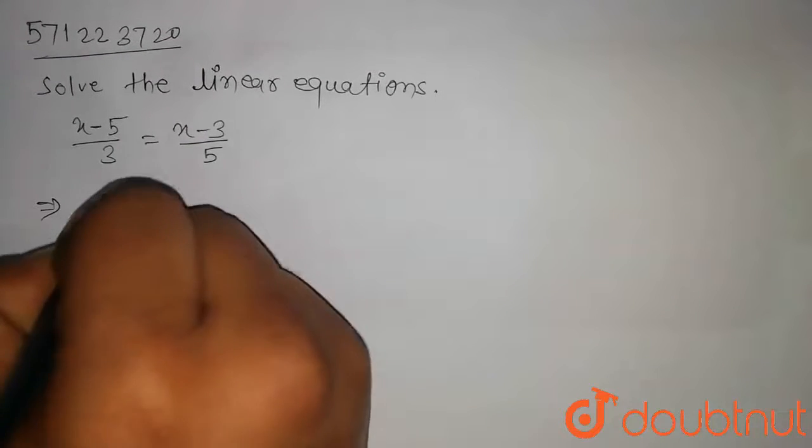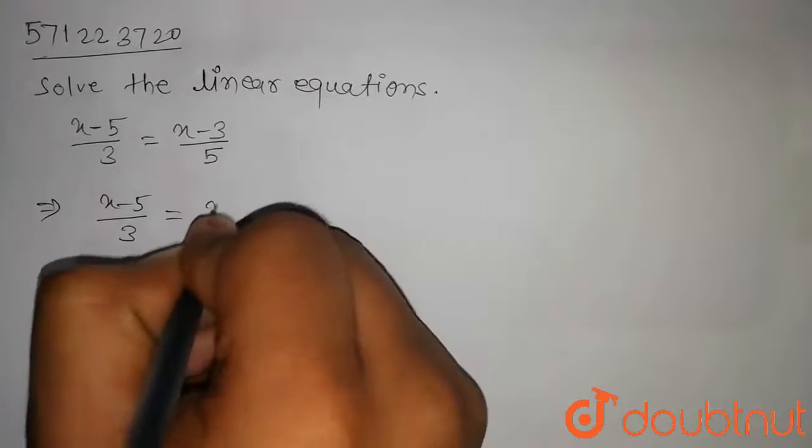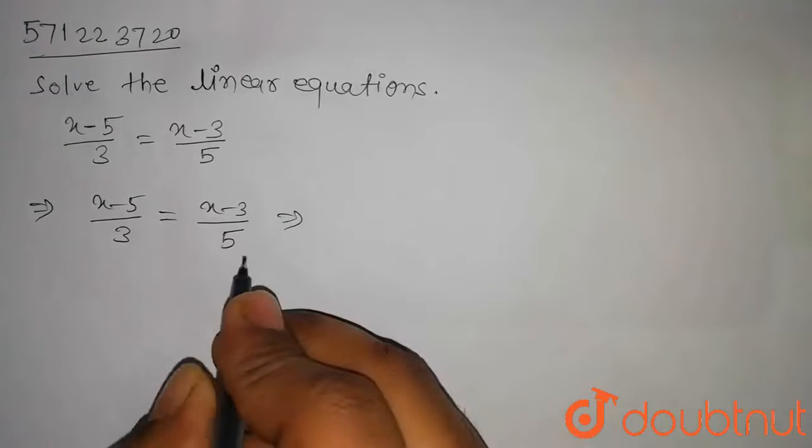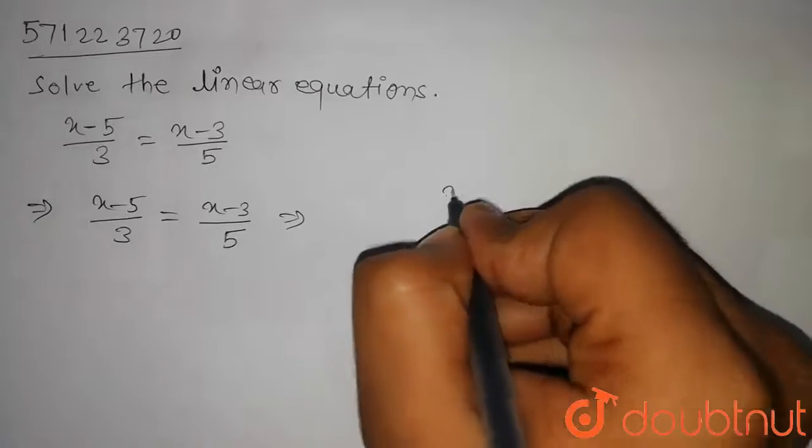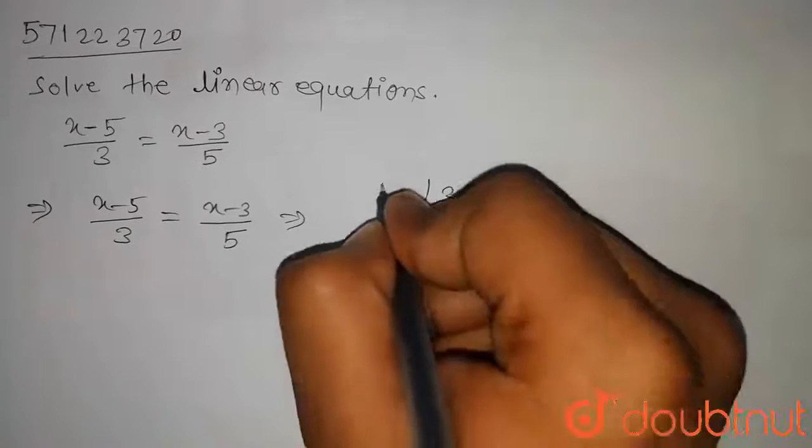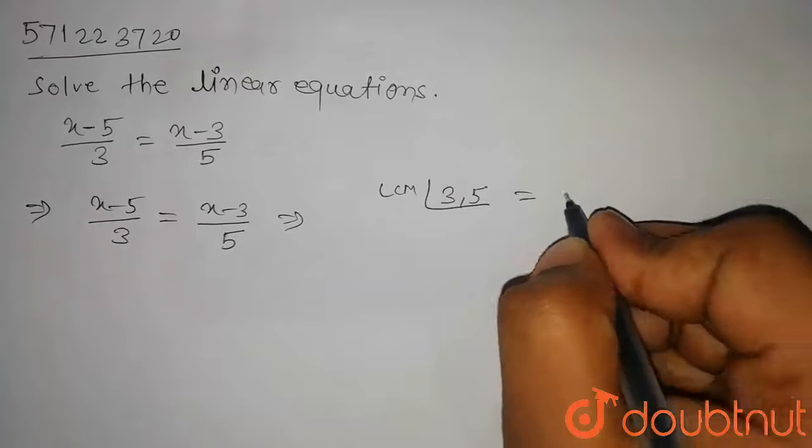The question is x minus 5 upon 3 equal to x minus 3 upon 5. First of all, take the LCM of 3 and 5. The LCM of 3 and 5 will be 15.